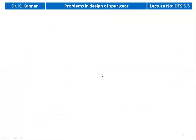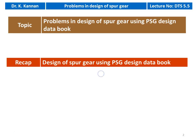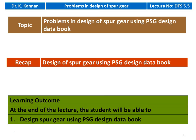This is lecture number 5.5. We are going to discuss the problems in the design of spur gear using PSG Design Data Book. In the earlier lecture 5.4, we discussed the design procedure — how to design a spur gear using the PSG Data Book. Now we follow the same procedure to solve numerical examples. The learning outcome: at the end of the lecture, the student will be able to design a spur gear using PSG Design Data Book.